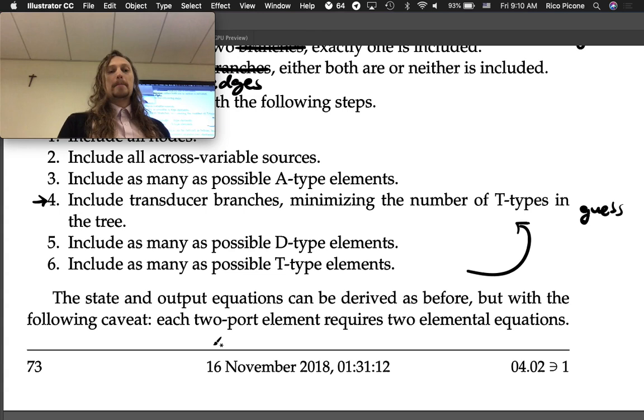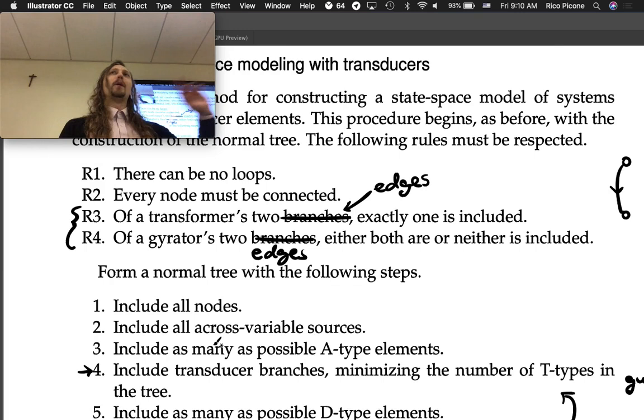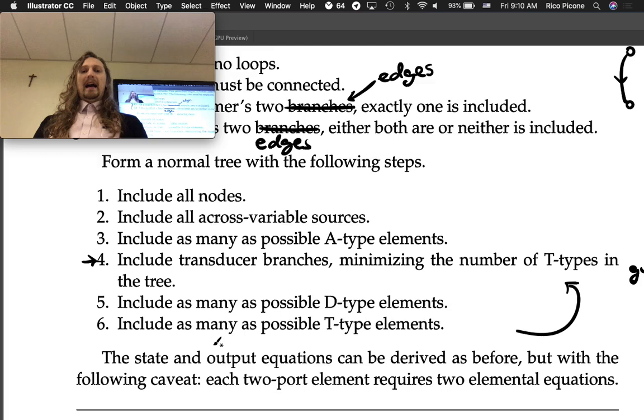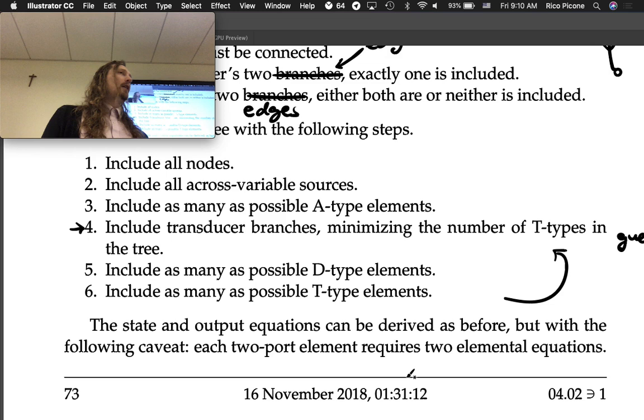The state and output equations can be derived as before, but with a single caveat that's different. So far we just constructed the normal tree, which was the first step of our state equation formulation. Now we proceed as before with our state equation formulation: writing the elemental equations, the continuity equations, compatibility equations, but with the caveat that each two-port element requires two elemental equations. We already introduced that in the last lecture. For a two-port element, we've got two elemental equations that show up. You just remember you have an extra elemental equation. That's the only caveat with the rest of the procedure.